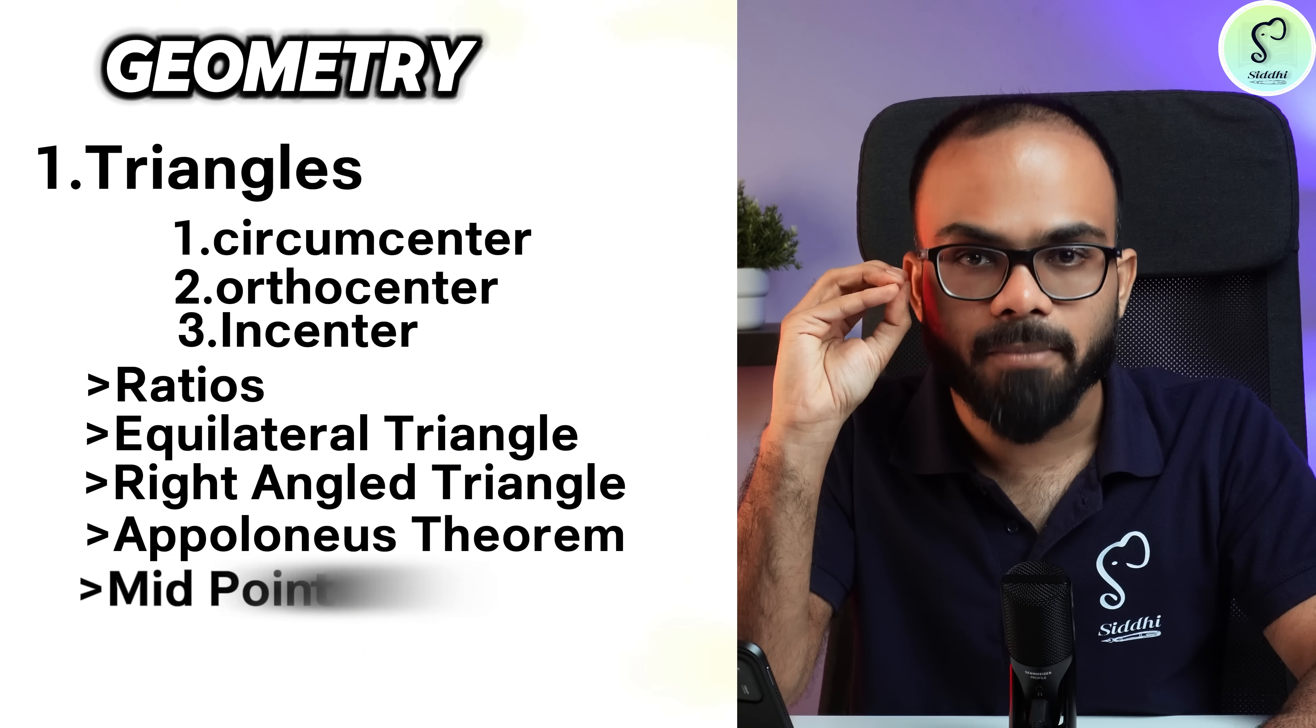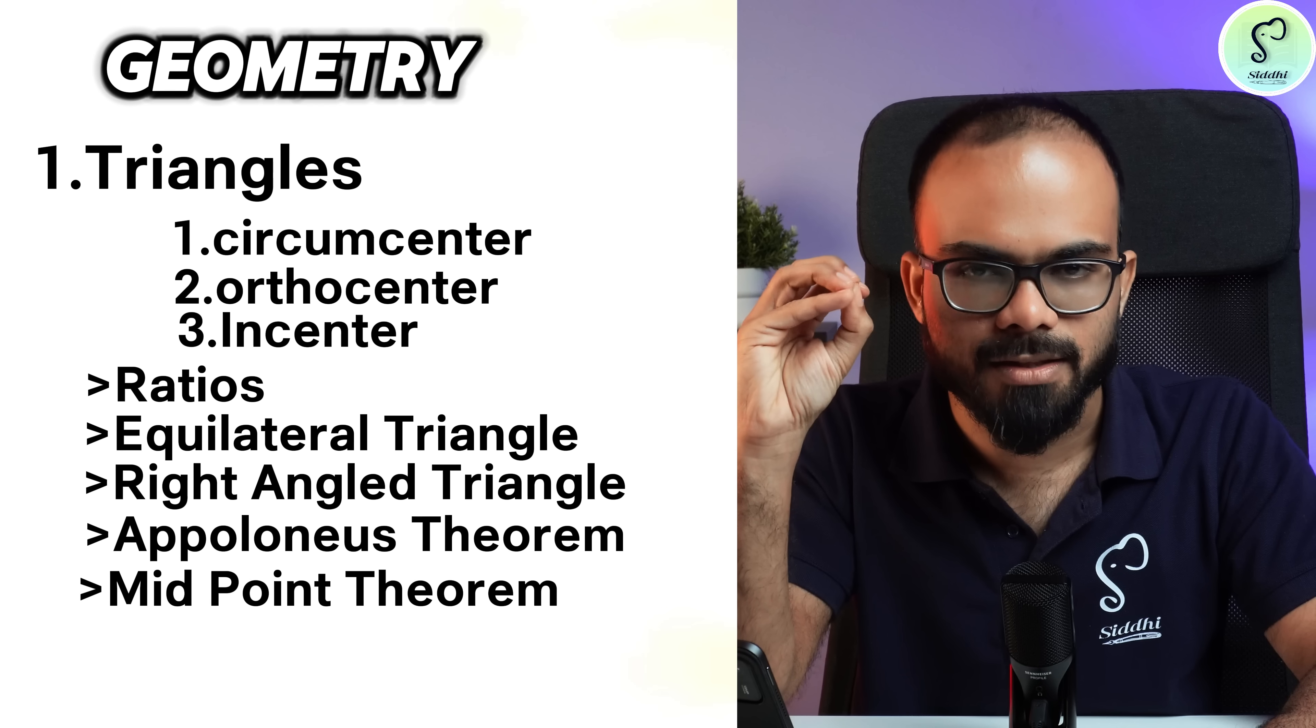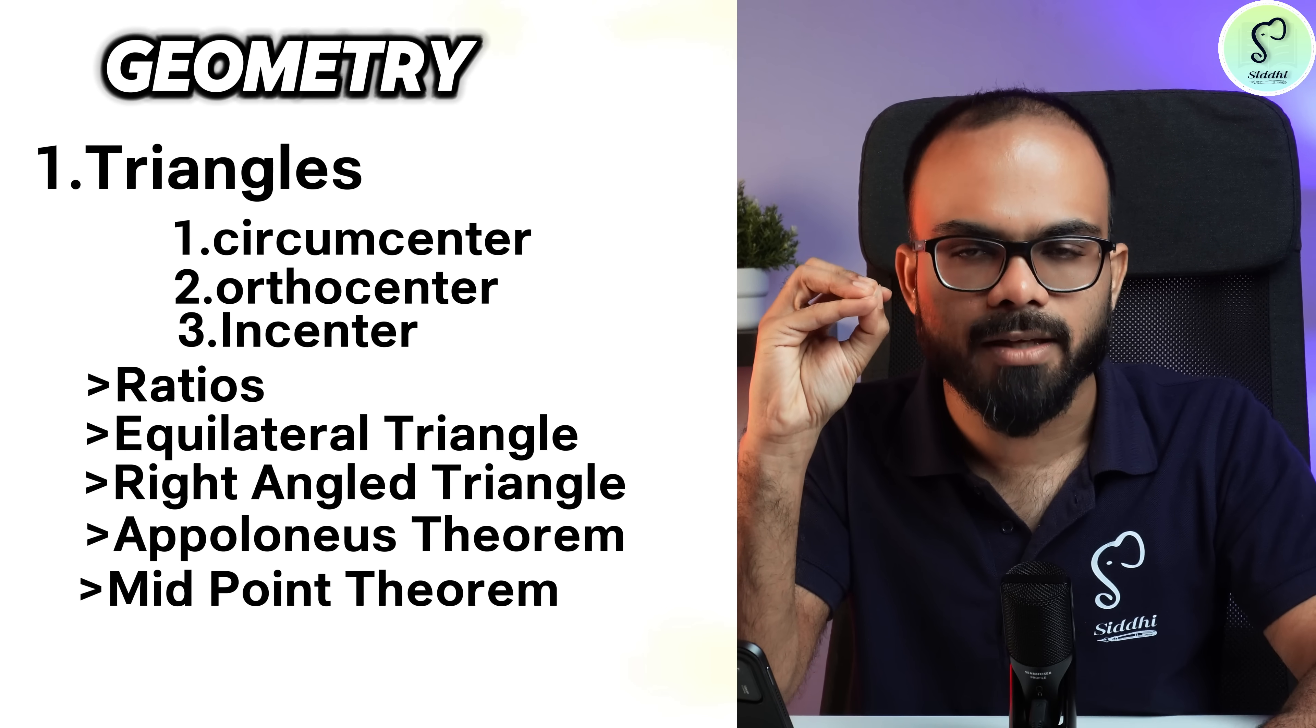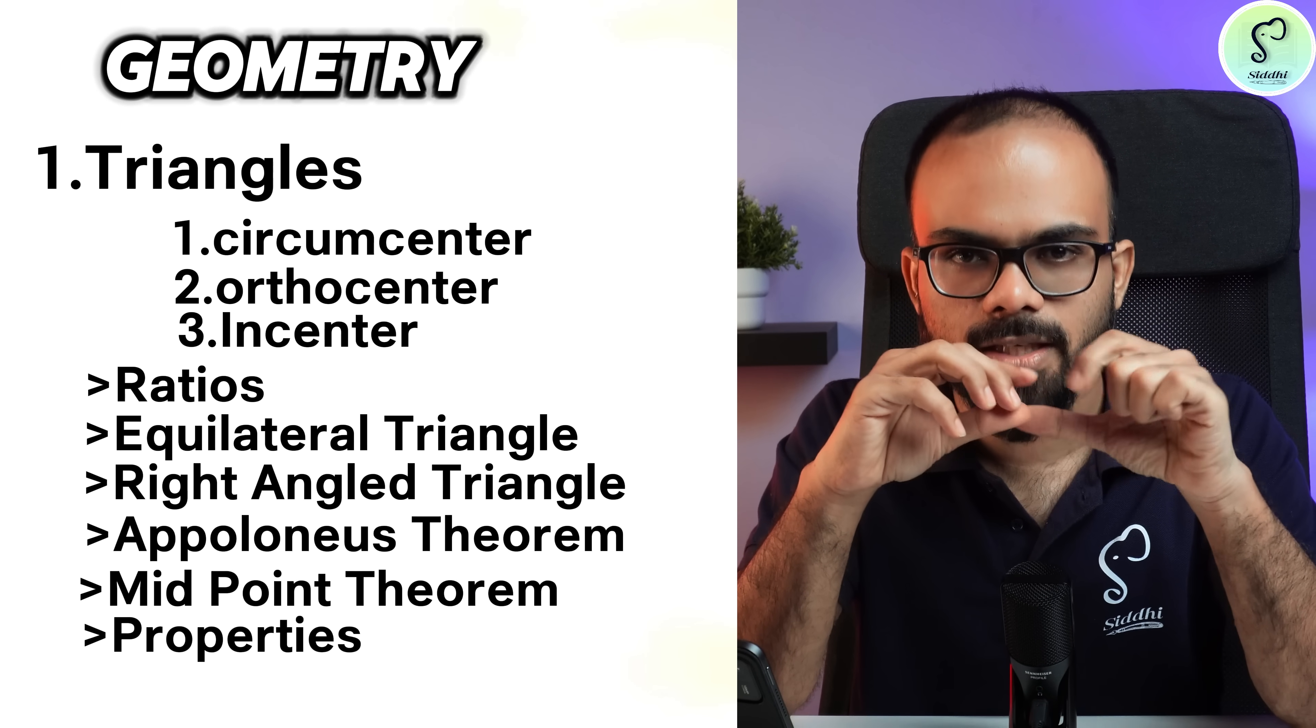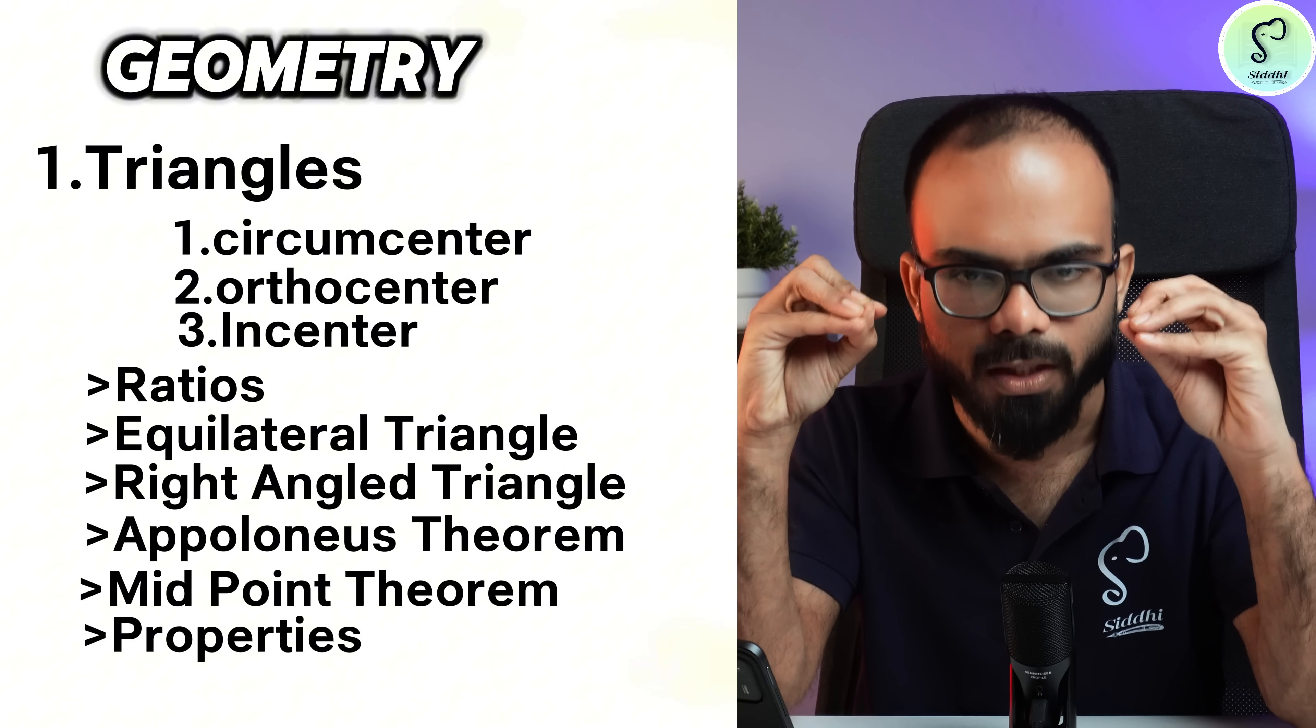Apollonius theorem, midpoint theorem and the applications of midpoint theorem with respect to areas, that is Thales theorem. Then with respect to triangles, properties of centroid, the ratio between orthocenter, circumcenter and centroid.